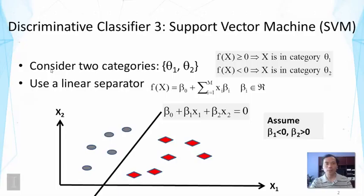To introduce this classifier, let's consider a simple case of two categories: theta1 and theta2. We want to classify documents into these two categories, representing each document by a feature vector x. The idea is to design a linear separator such that if the sign of the function value is positive, the object is in category 1; otherwise, it's in category 2. This makes zero the decision boundary between the two categories.